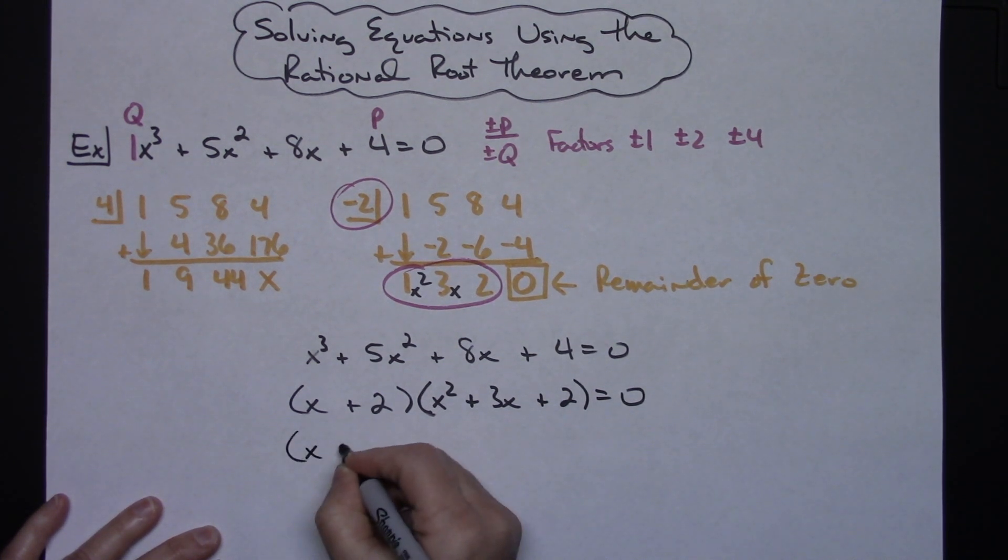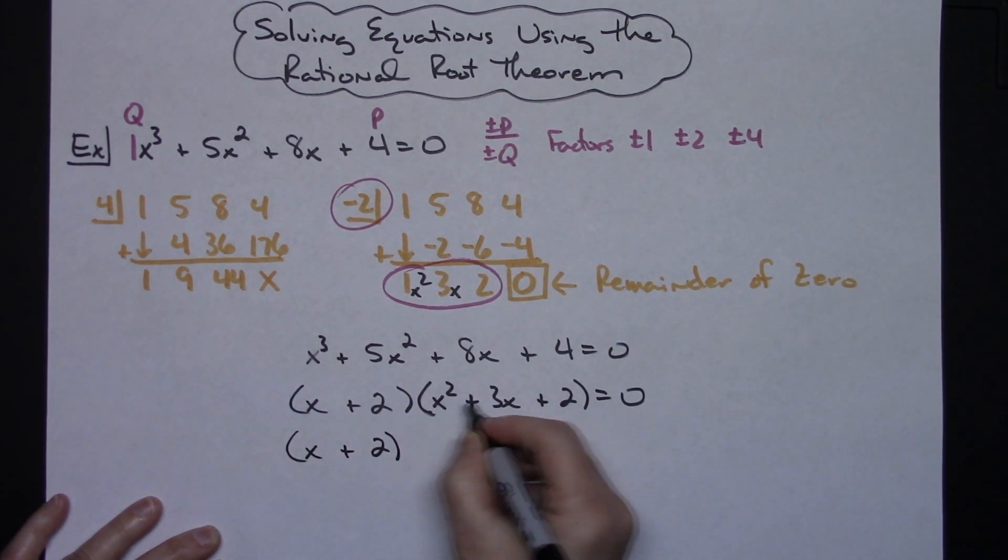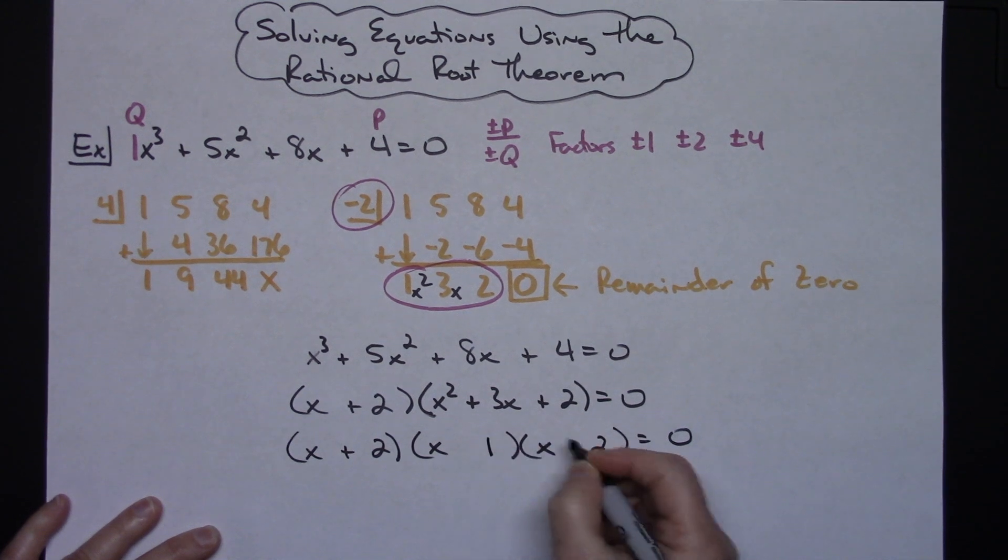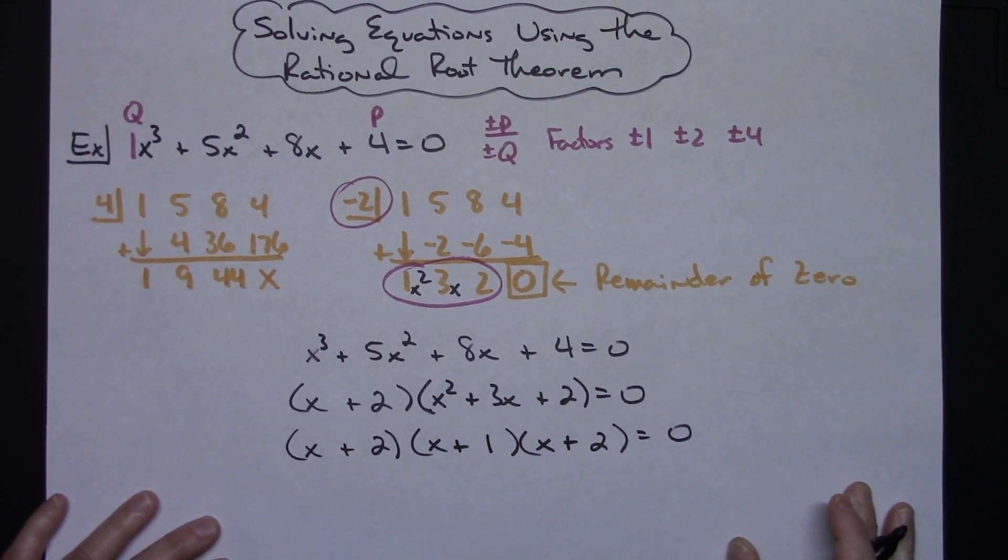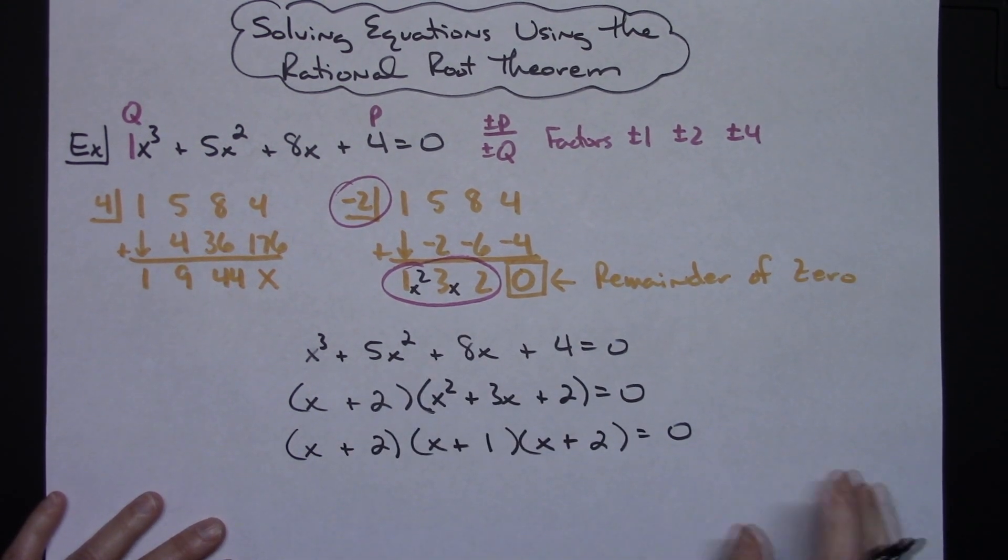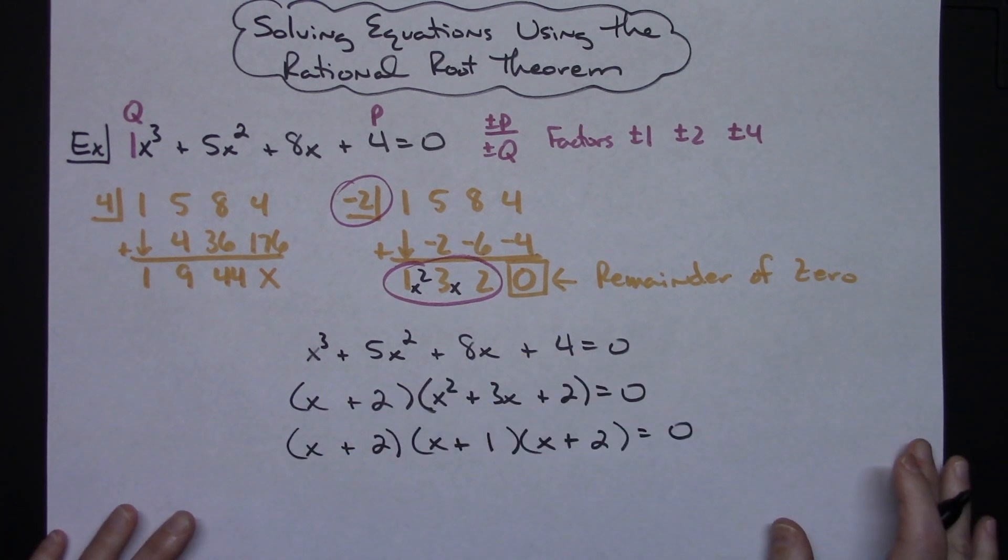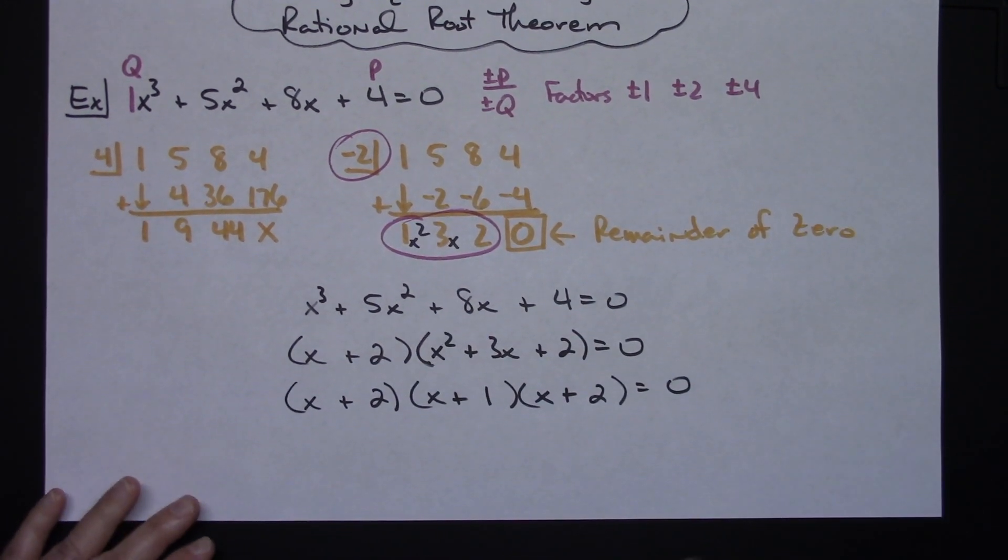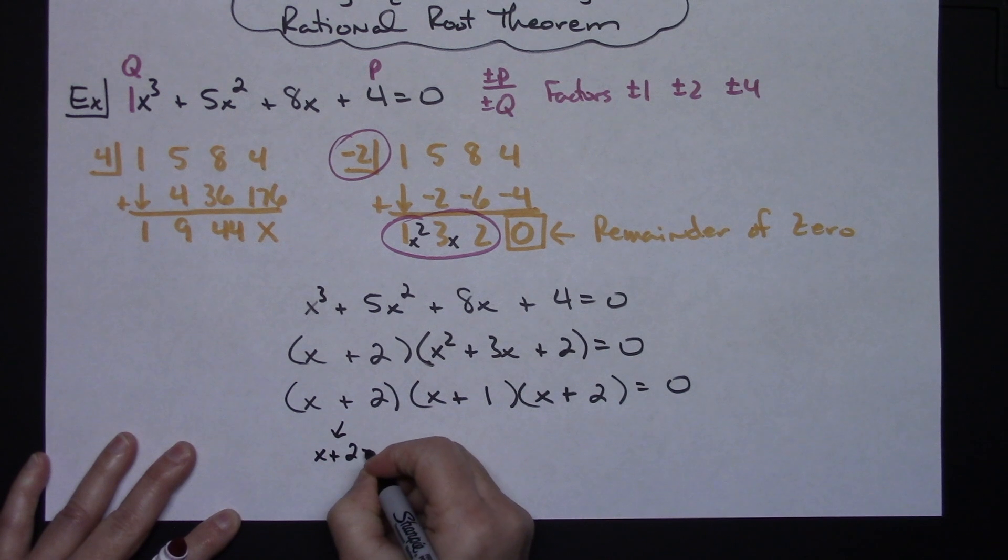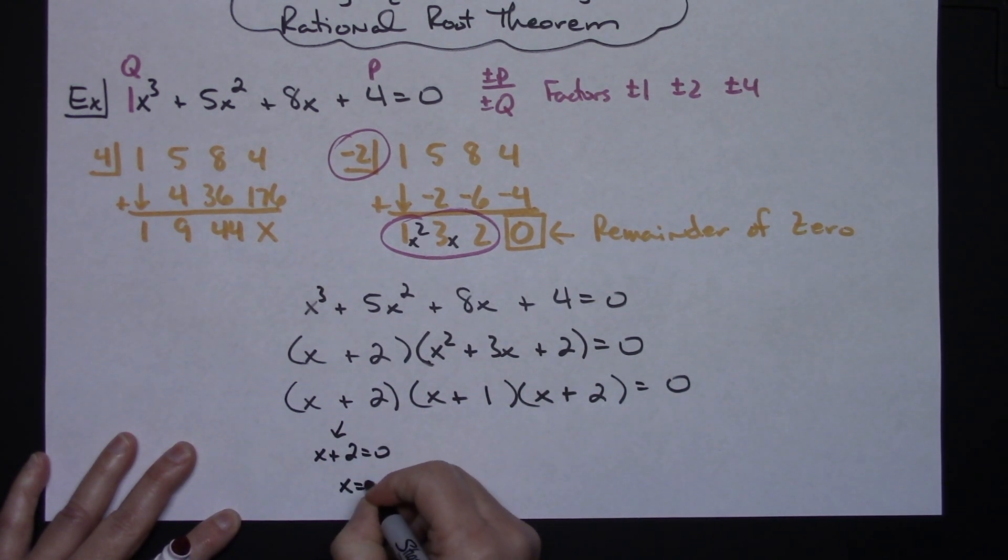So this term right here x + 2 is going to stay. This trinomial will factor into an x and an x. We've got to use a two and a one with pluses there. Now this four terms I have been able to factor using the rational root theorem and since the ultimate equation the directions was solve that equation now I can use that zero product property and set every one of these equal to zero. So x + 2 = 0 is going to give me x = -2.